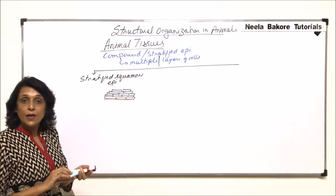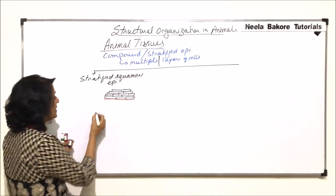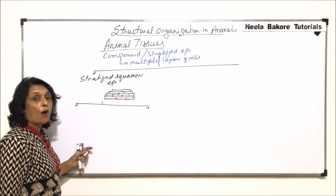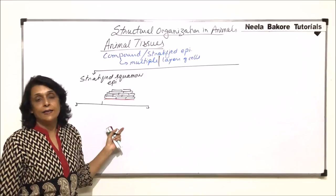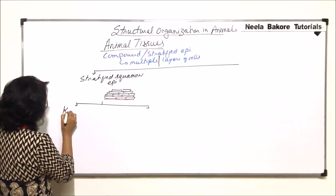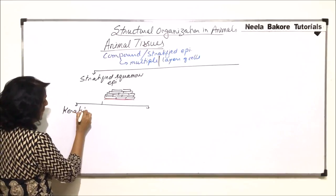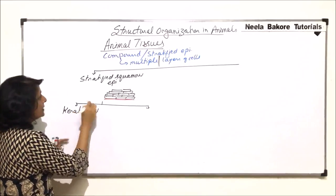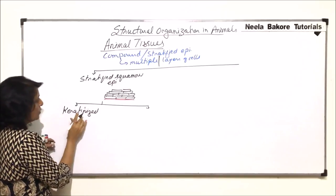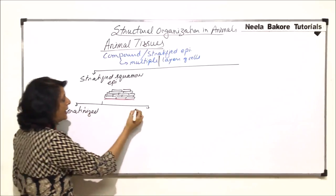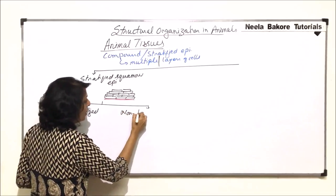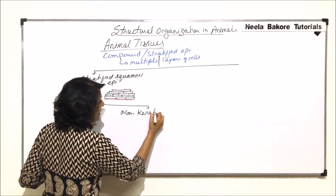This stratified epithelium is further divided into two categories on the basis of whether keratin is deposited in these cells or not. We call it keratinized stratified squamous epithelium, and if keratin is not deposited, then it would be called non-keratinized.